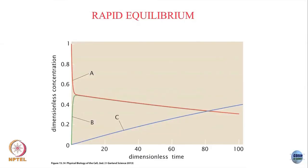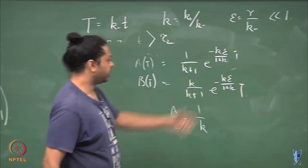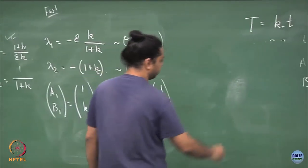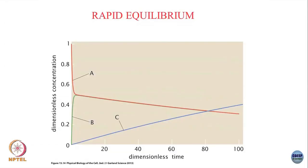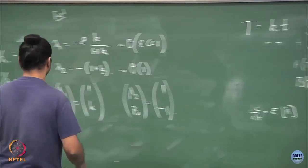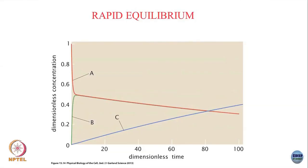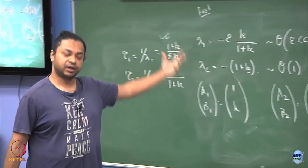Very quickly A and B come to equilibrium amongst themselves — within time τ₂ = 1/(1+k) — and then continue to evolve in a fixed ratio. This quantifies the concept of rapid equilibrium: after time τ₂, A/B is fixed at 1/k. Then to find the full evolution you use the full equations; and since dC/dT = ε·B, with B now known, you can solve for C as well. The true steady state is reached on the long timescale τ₁ = (1+k)/(εk).